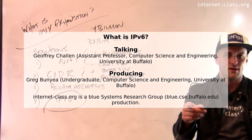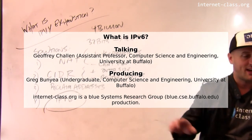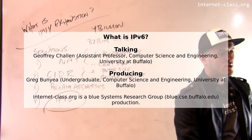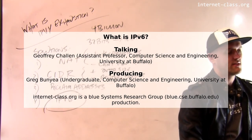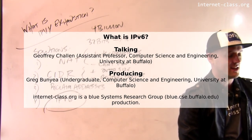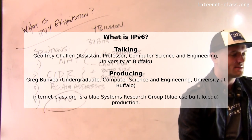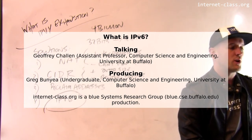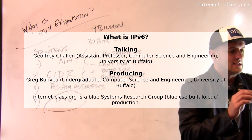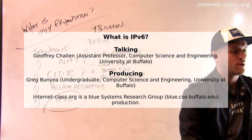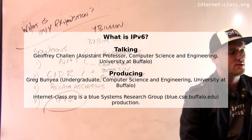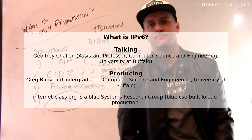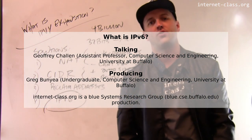The number of IPv6 addresses — ready? 340 undecillion, 282 decillion, 360 nonillion, 920 octillion, 930 septillion, 463 sextillion, 463 quintillion, 370 quadrillion, 607 trillion, 431 billion, 678 million, 211 thousand, and 456. Don't forget the 456.